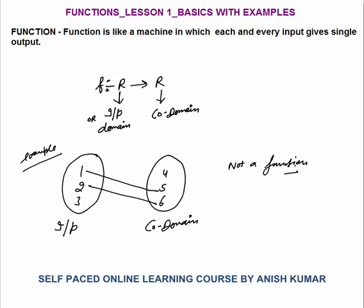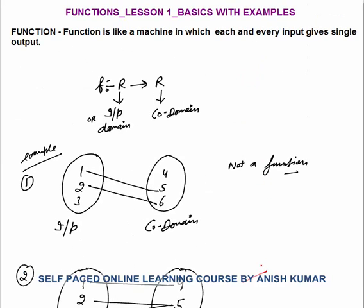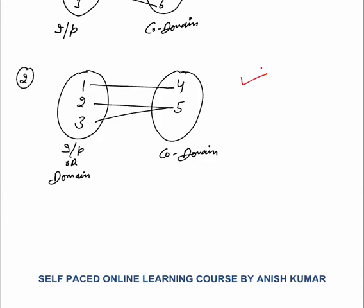I am giving some examples just to tell you which of the following are functions, which of the following are not functions. Second example: input set or domain set is 1, 2 and 3. Co-domain set is 4 and 5. Is this a function? Yes, this is a function. You can see that each and every input has one output. Input 2 has one output, 5. Input 3 has also one output, 5. Each and every input should have a single output. That is what the definition of function says, and this example 2 satisfies the condition of function. So, this is a function.